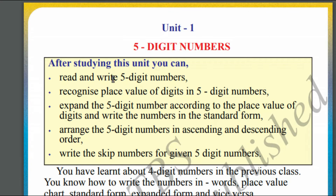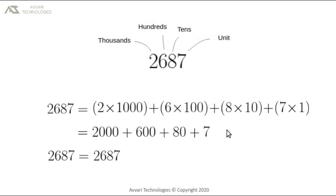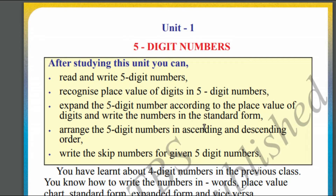After studying this unit, you will be able to read and write five-digit numbers, recognize the place value of digits in a five-digit number — that is what we saw on this page, representing a number in units place, tens place, hundreds place, and thousands place. We will apply the same principle here. Then we will expand the five-digit number according to the place value of digits and write the numbers in the standard form. We will see this later.